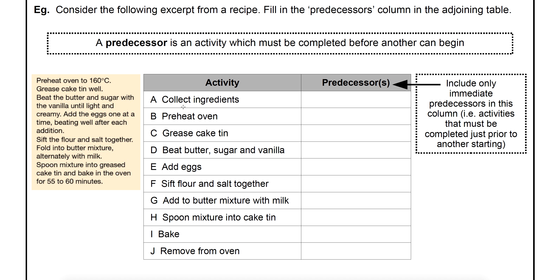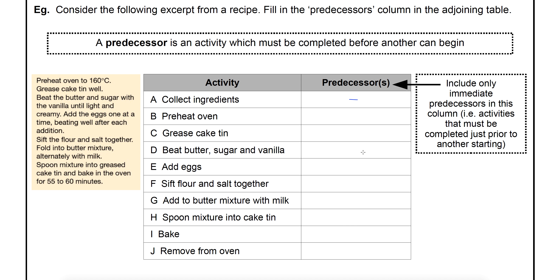The first one is collect ingredients. There's nothing from this list that needs to be done before you collect those ingredients, so there is no immediate predecessor. Likewise, preheating the oven — you don't need the ingredients to preheat the oven, so there's nothing that needs to be done before that step either. Most people would even preheat the oven first, and you'll see it listed first in the recipe before they collect their ingredients.